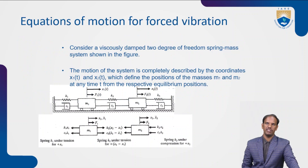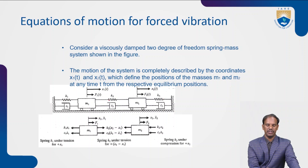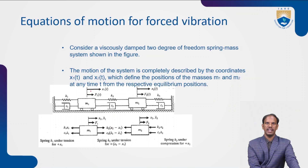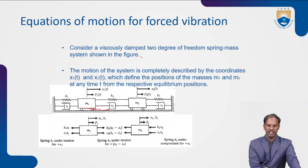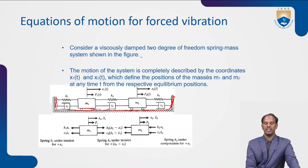Coming to the equation of motion for forced vibration: in the figure there is a spring-mass-damper system with three springs (k1, k2, k3), three dampers (c1, c2, c3), and two masses (m1, m2). Force F1 acts on mass one and force F2 acts on mass two. Mass one travels distance x1(t) and mass two travels distance x2(t). We consider a viscously damped two degrees of freedom spring-mass system as shown in the figure.